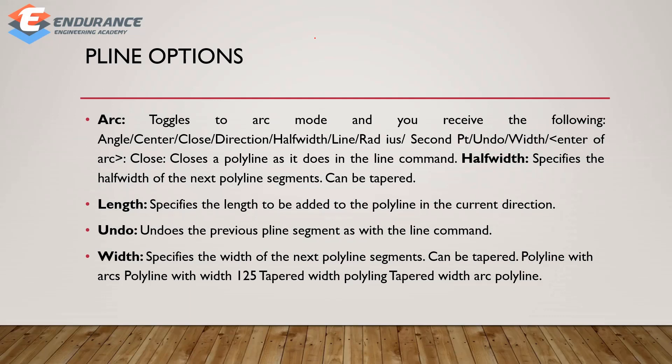The next one is the Pline option — Plines. If you have an arc length, you can switch to arc mode. If you have an arc mode, you can specify the angle. Next, you can close the polyline. If you have a half width, you can specify the next polyline. You can add length. If you have a previous Pline segment, you can add length. Next, you can add width using the half width option.